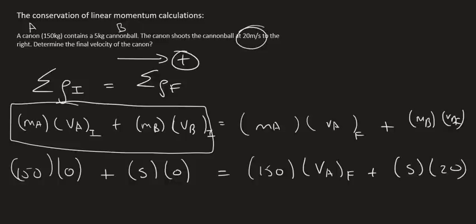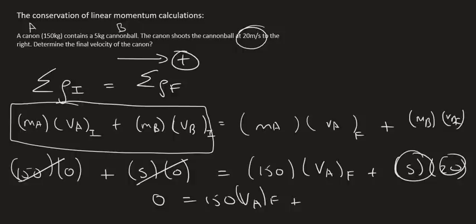Now it just becomes a simple thing to solve. So these become zero, so that's zero equals to 150 VA final, plus five times 20 is 100. You then take the 100 over to the other side, and so you end up with negative 100 equals to 150 velocity of A final.